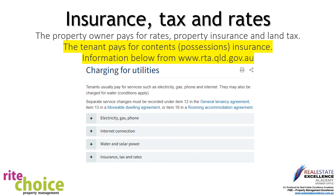During your tenancy it is your responsibility to pay for your own contents and possessions insurance. Please refer to the terms of the agreement regarding electricity, gas, phone, internet, water, or solar power to ensure you are aware of your responsibilities for connections of such services. The property owner pays for rates, property insurance, and land tax. Our agency strongly recommends that you ensure you have your own contents and possessions insurance.